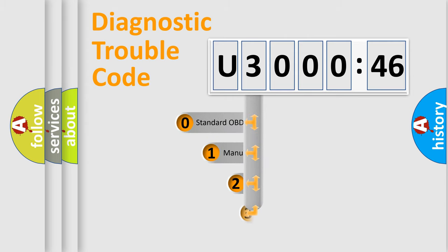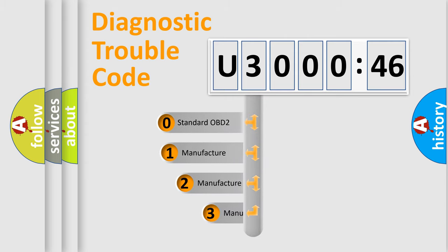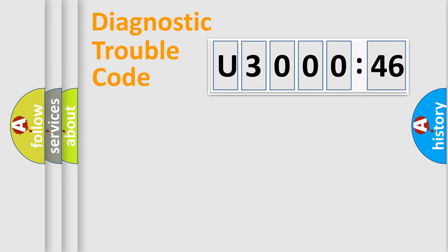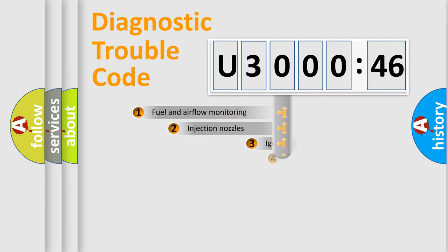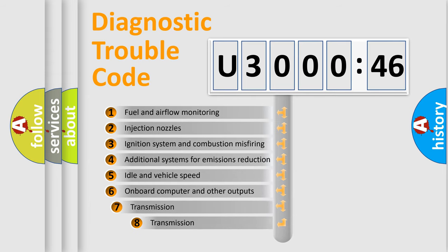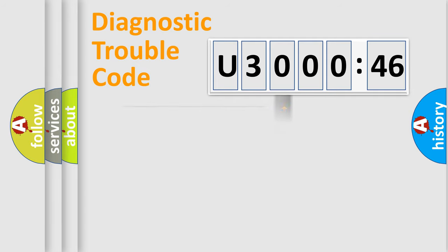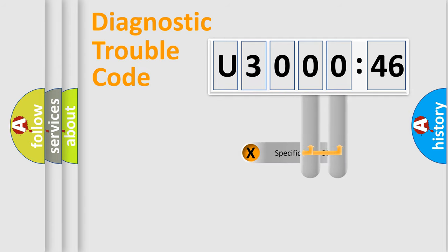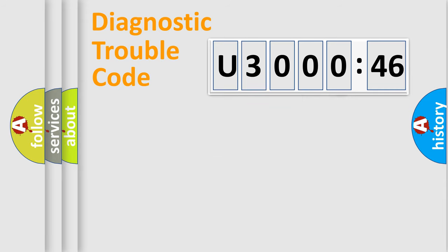This distribution is defined in the first character of the code. If the second character is expressed as zero, it is a standardized error. In the case of numbers 1, 2, or 3, it is a manufacturer-specific error. The third character specifies a subset of errors. This distribution is valid only for the standardized DTC code. Only the last two characters define the specific fault of the group.